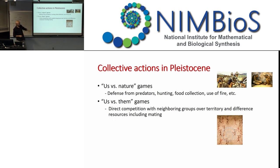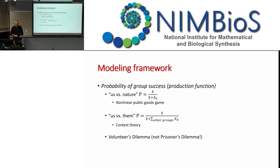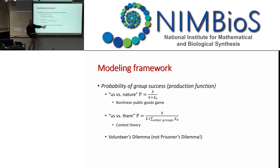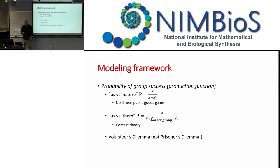As I mentioned, there are two general types of collective actions important for our ancestors that still exist now, and I call them 'us versus nature' and 'us versus them' games. Examples from the Pleistocene: defense from predators or hunting is 'us versus nature,' while 'us versus them' is direct competition with other groups. I define the probability of success as capital P in these 3D games, and in both cases it increases with effort. The more effort your group makes, the higher the probability of successfully securing some reward — from nature or from other groups. I want to emphasize that we are dealing with a volunteer's dilemma here, not a prisoner's dilemma.